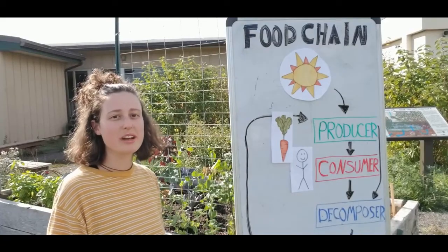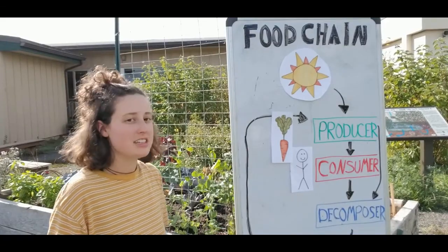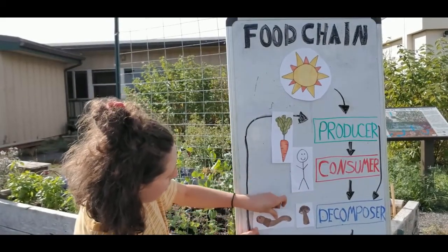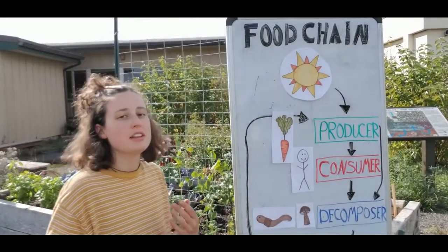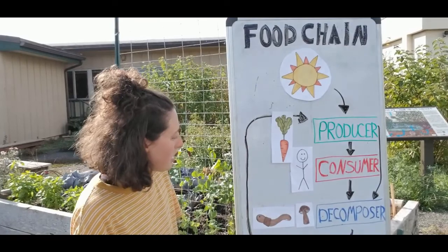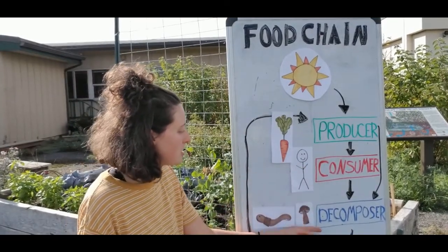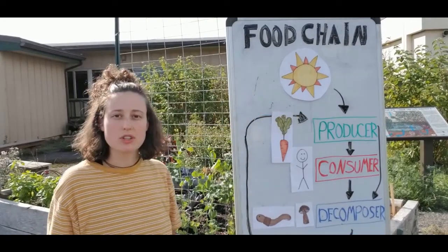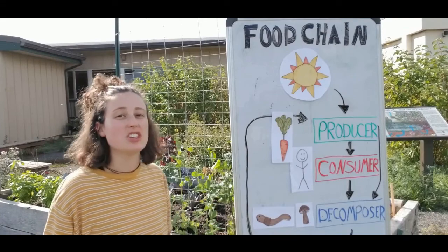The last group are the decomposers, and these are so important. Decomposers could be like a mushroom or an earthworm. And the decomposers get their energy from dead or decaying plants or animals. So the energy moves from the producers and the consumers into the decomposers, and then they help to return the energy back to the producers by taking all those nutrients and putting it back into the soil.